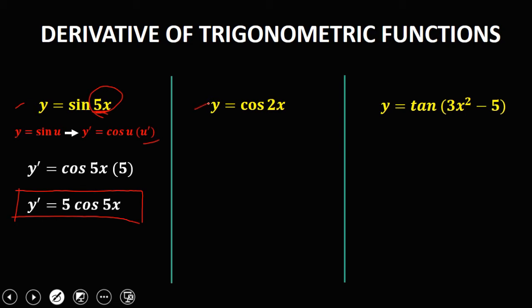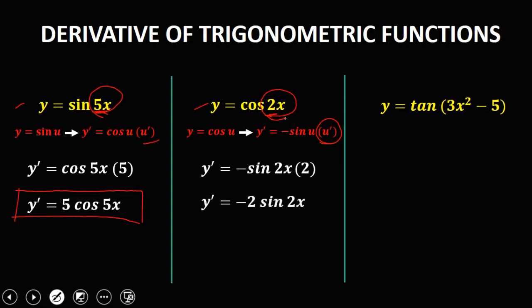For this given, y equals cosine 2x. Since the derivative of cosine is negative sine u, y prime is equal to negative sine 2x — because u is equal to 2x — times the derivative of u, the derivative of 2x, which is 2. So y prime is equal to negative 2 sine 2x.